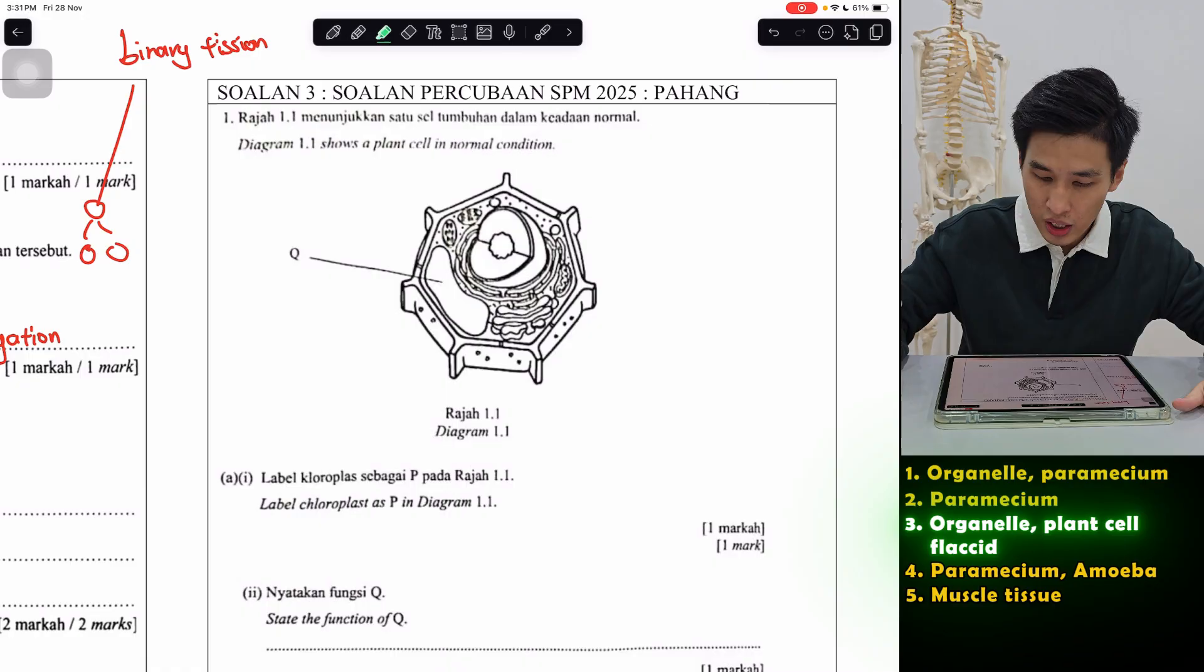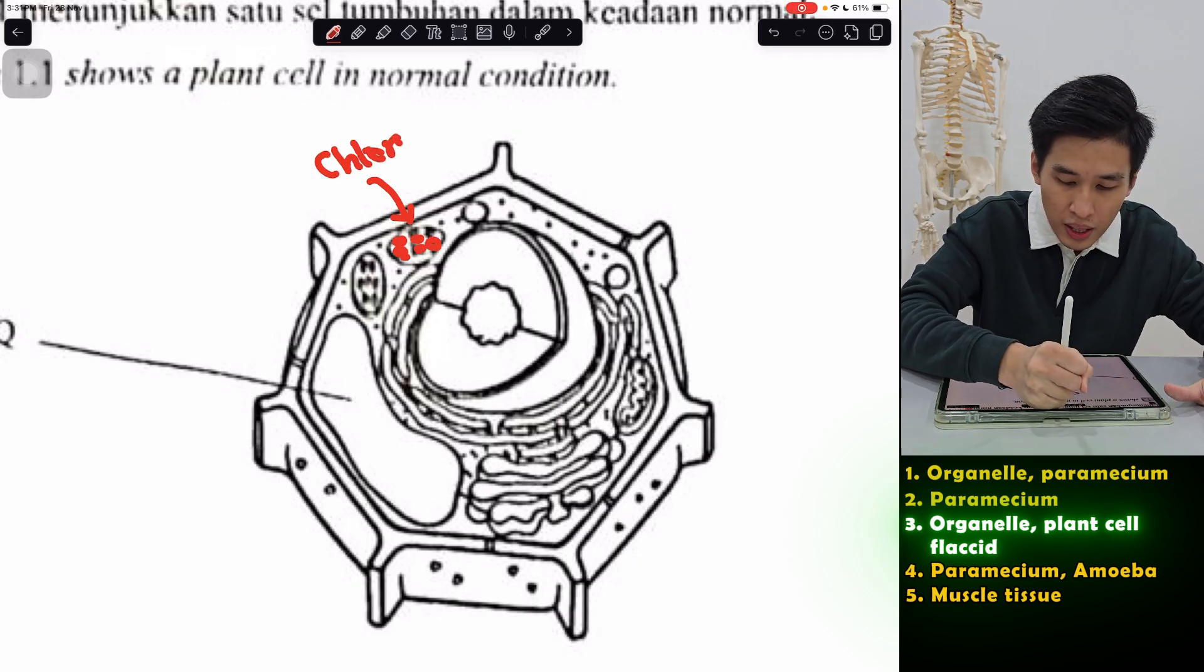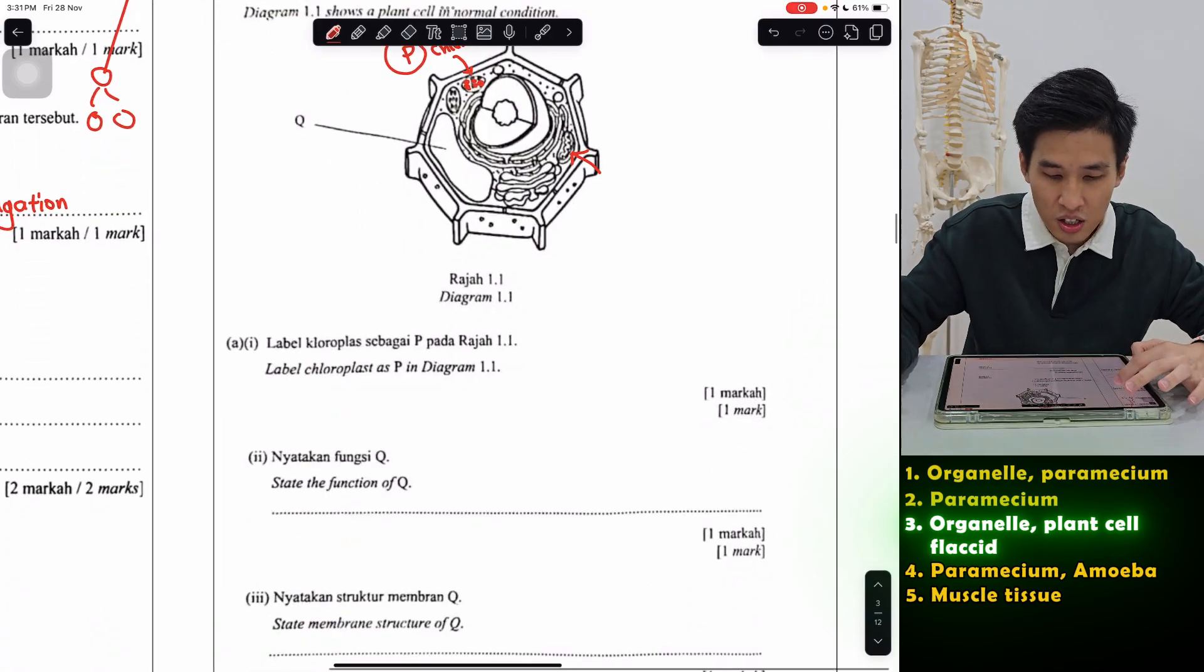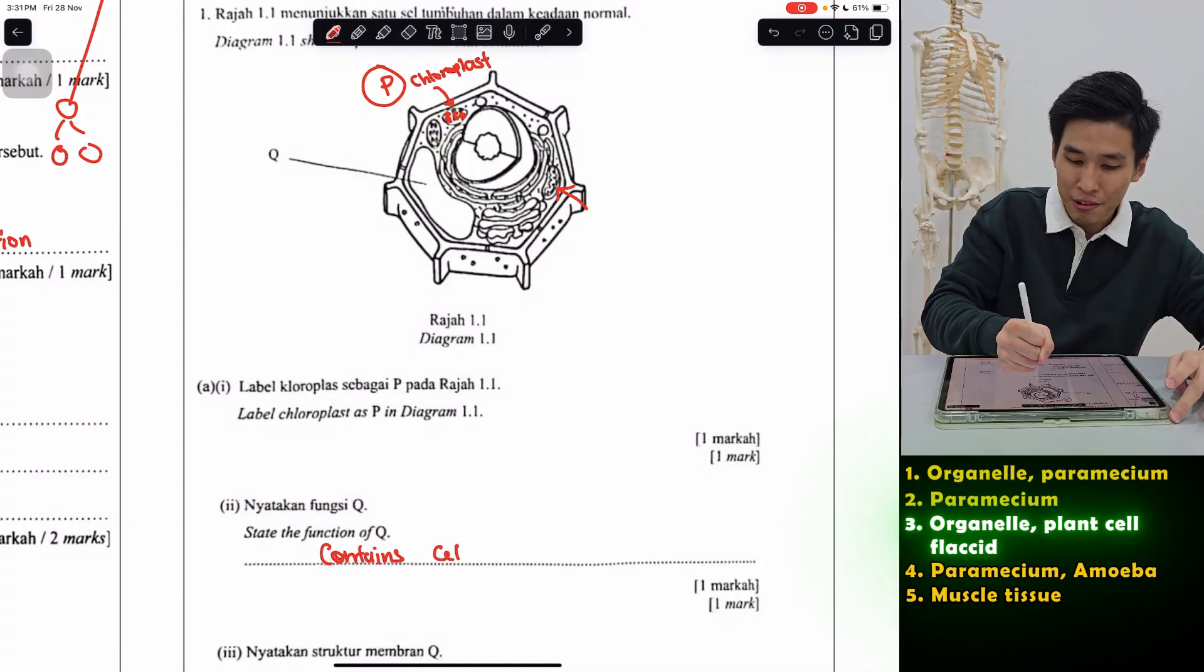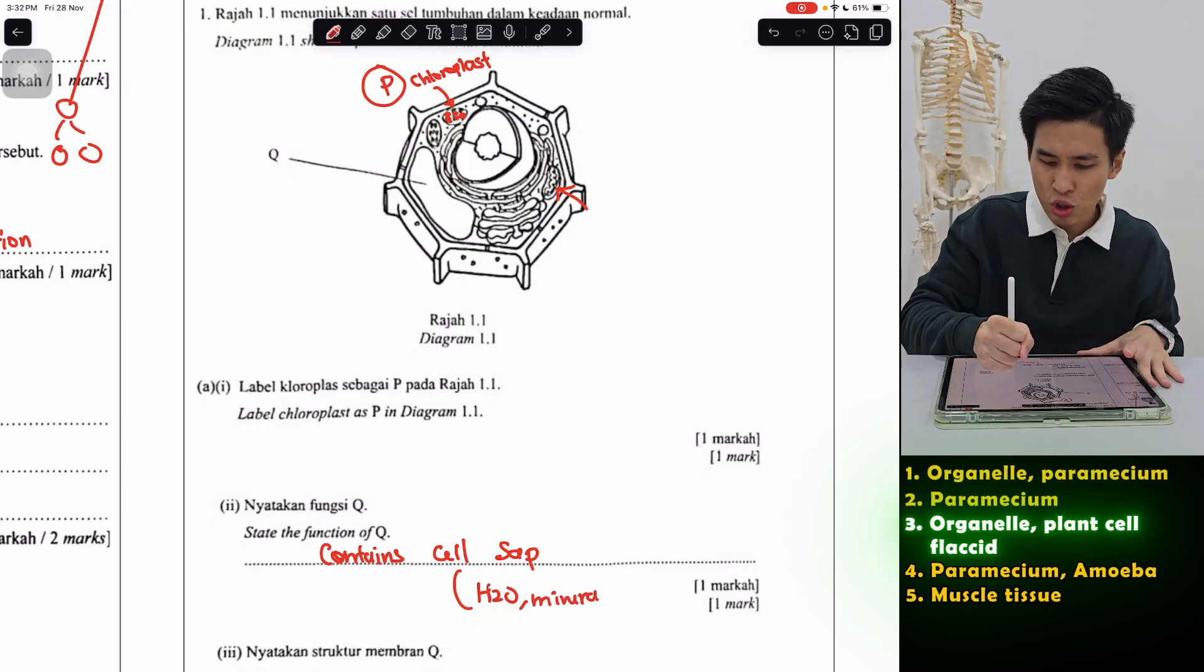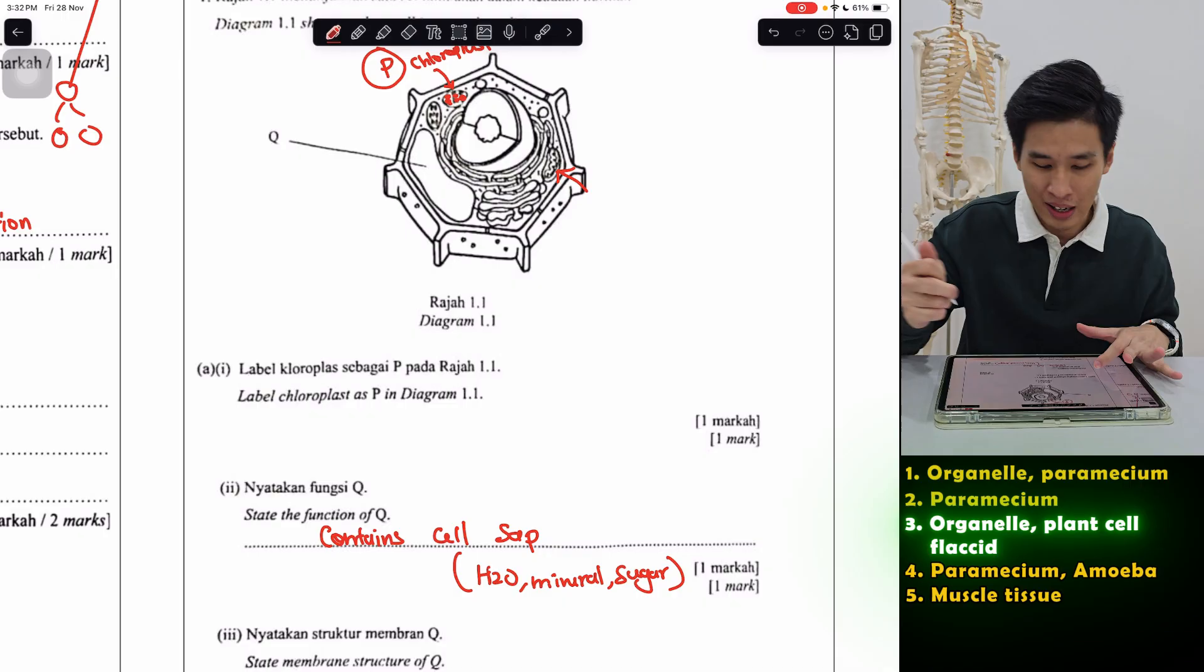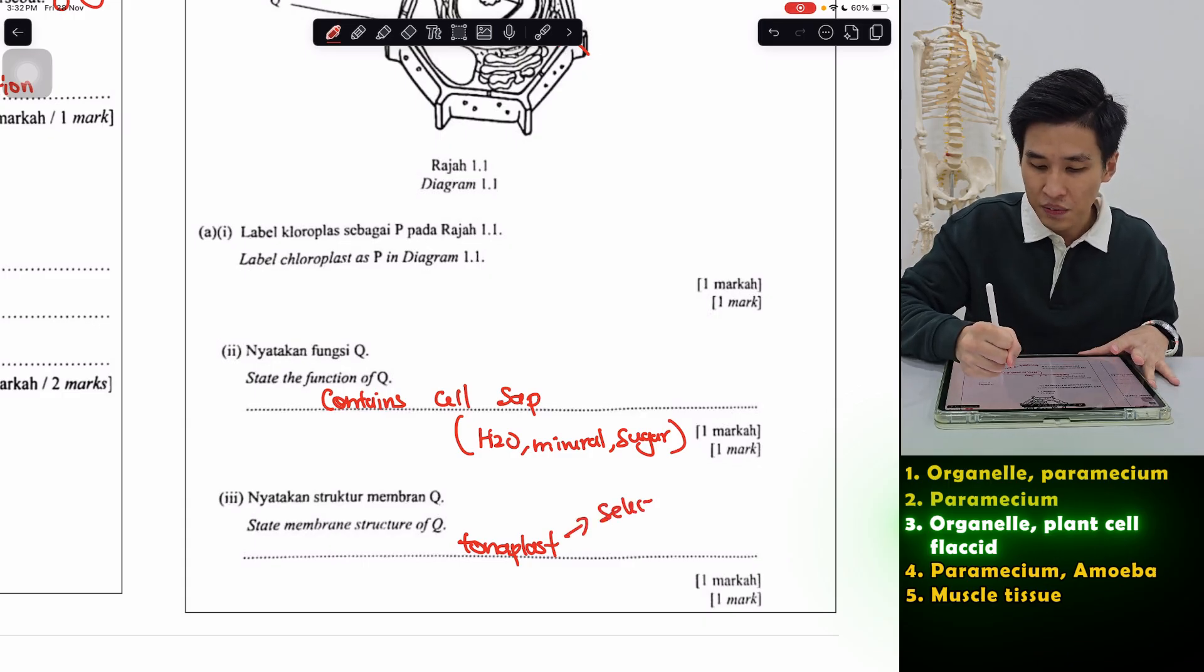Next, organelles once again, label the chloroplast. This question is a bit not very clear, but you can see oval shape, a lot of round things like that. Yeah that's the chloroplast. Mitochondria is obviously this one, inner folded membrane. State the function of Q. So Q is the vacuole. Vacuole basically just contains what we call cell sap. Cell sap is like the stuff of the cell. Mainly there's water and a lot of nutrients like minerals, sugar, amino acid, a lot. The membrane of vacuole, so vacuole has a membrane surrounding it. There's a name for it, sounds like toner. It's called tonoplast. And this membrane, if you ask characteristics, just like the plasma membrane, selectively permeable.